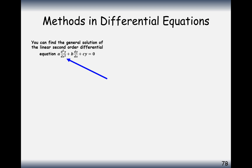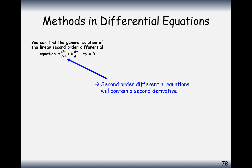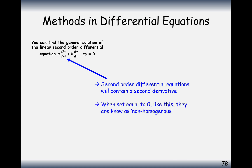So what does a second order differential equation look like? It's something times the second derivative, plus something times the first derivative, plus something times y, all added together and set equal to zero. In this case a, b and c are just numbers — not functions of x, just numbers.